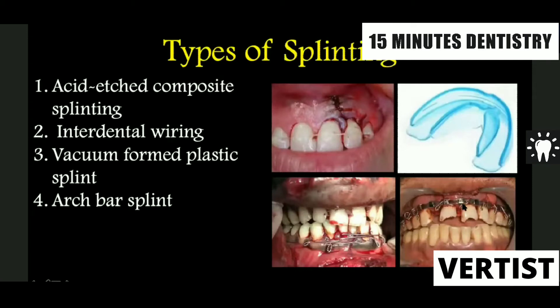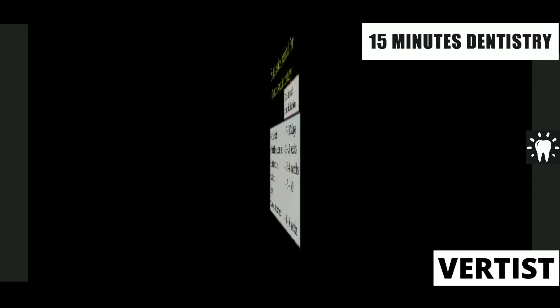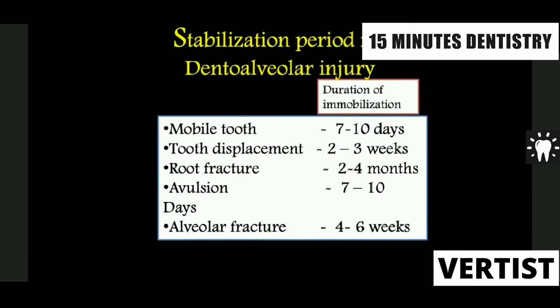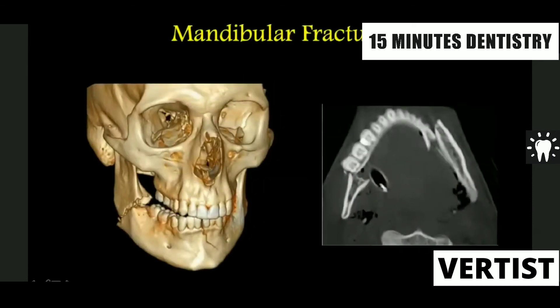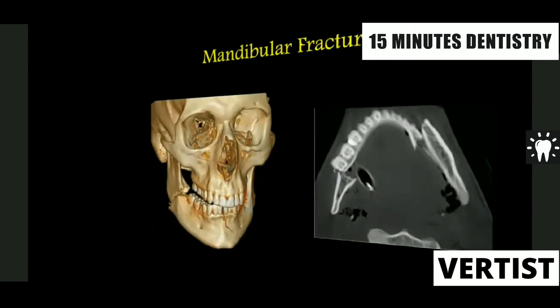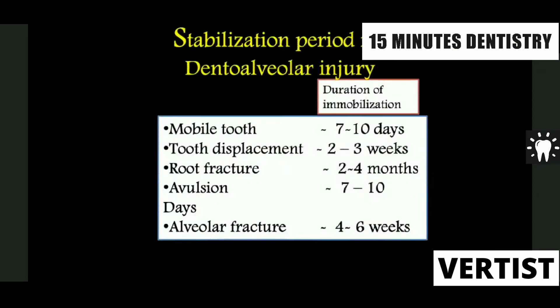An arch bar is also helpful when you've got a fracture of the mandible or the maxilla. What is the stabilization period for dentoalveolar injury? You've got the mobile tooth — 7 to 10 days; displaced teeth — 2 to 3 weeks; root fracture — 2 to 4 months.